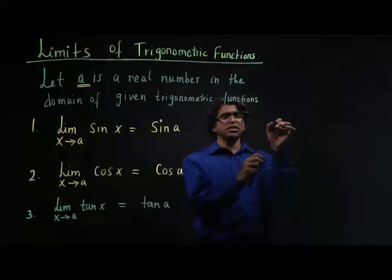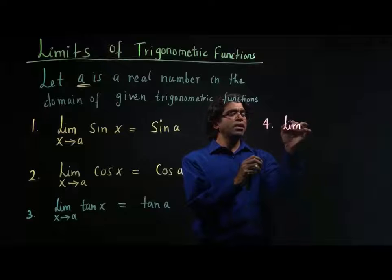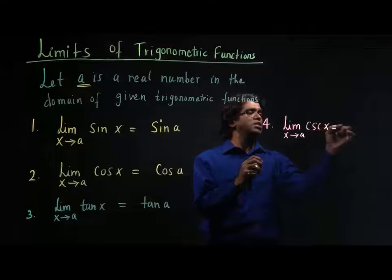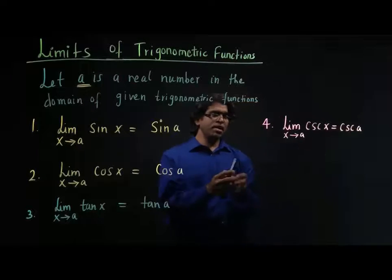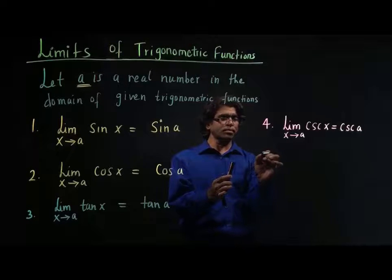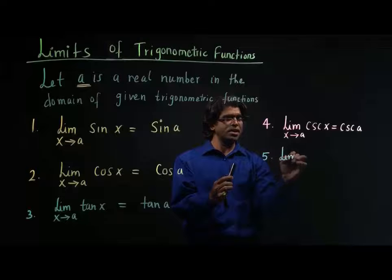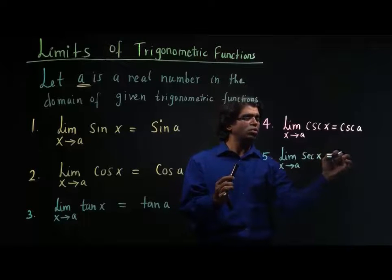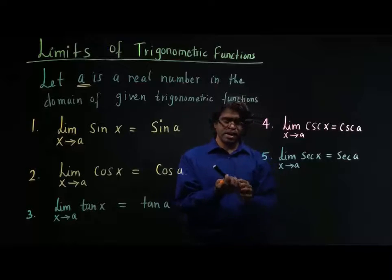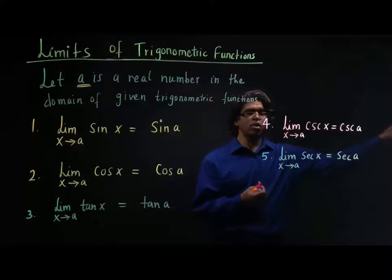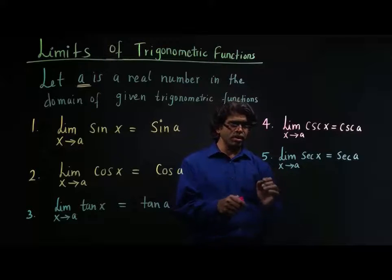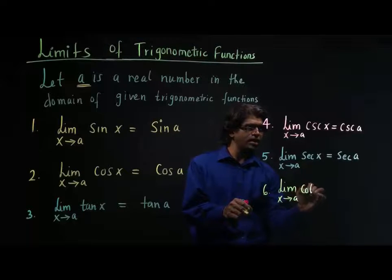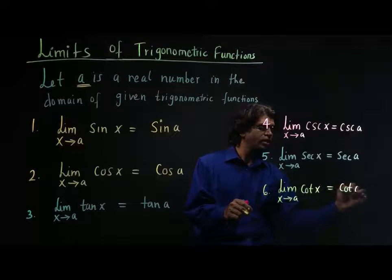My fourth trigonometric function is: limit as x tends to a of cosecant x equals cosecant of a. My fifth trigonometric function is the secant function: limit as x tends to a of secant x equals secant of a. And my sixth and last trigonometric function is: limit as x tends to a of cotangent x equals cotangent of a.